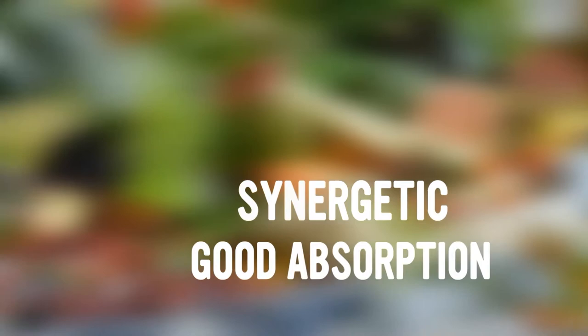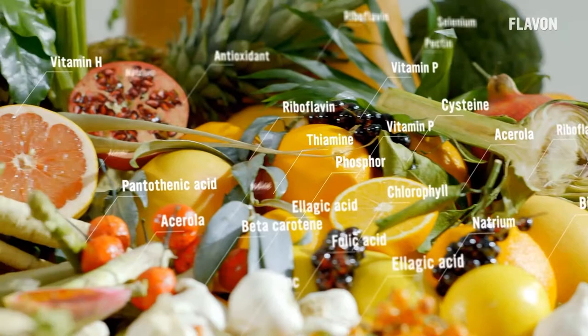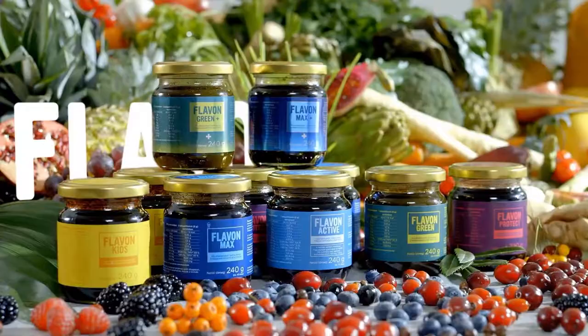Cooking and heating destroy vitamins and enzymes. This is prevented by the special production process at Flavon. Flavon is concentrated from excellent quality fruits and vegetables in a careful manufacturing process. This way the valuable active substances remain undamaged, and all this is achieved without any preservatives. The resulting gel consistency ensures the best and most effective absorption.